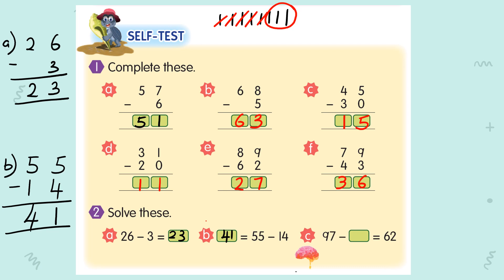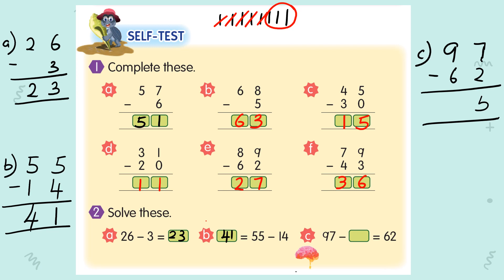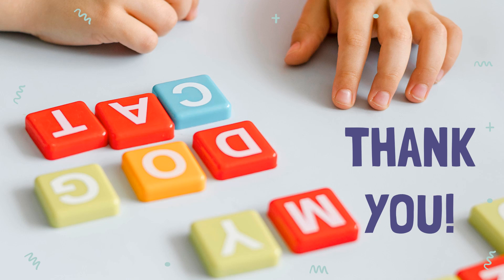For C: 97 minus 62. 7 minus 2 equals 5. 9 minus 6 equals 3. So your answer is 35. That's all for today. Thank you.